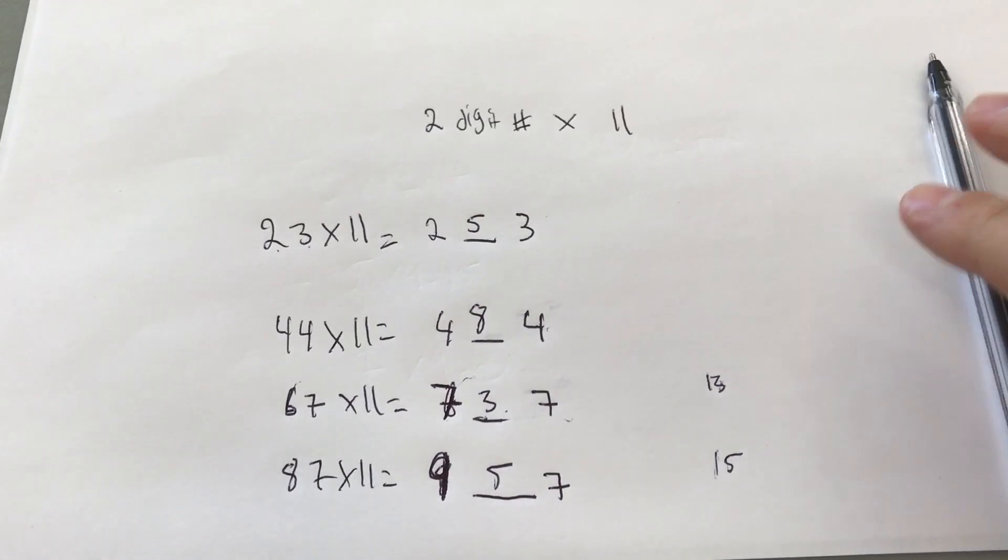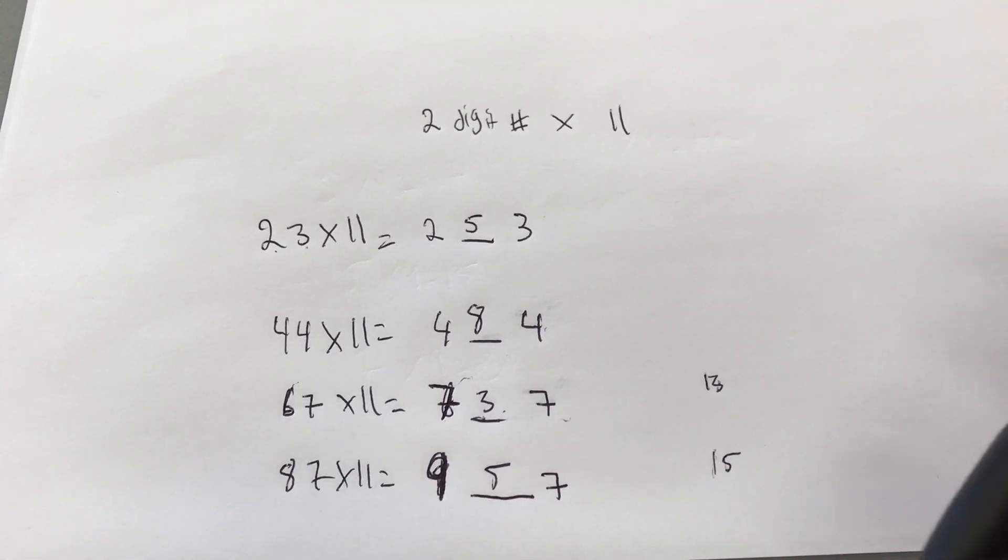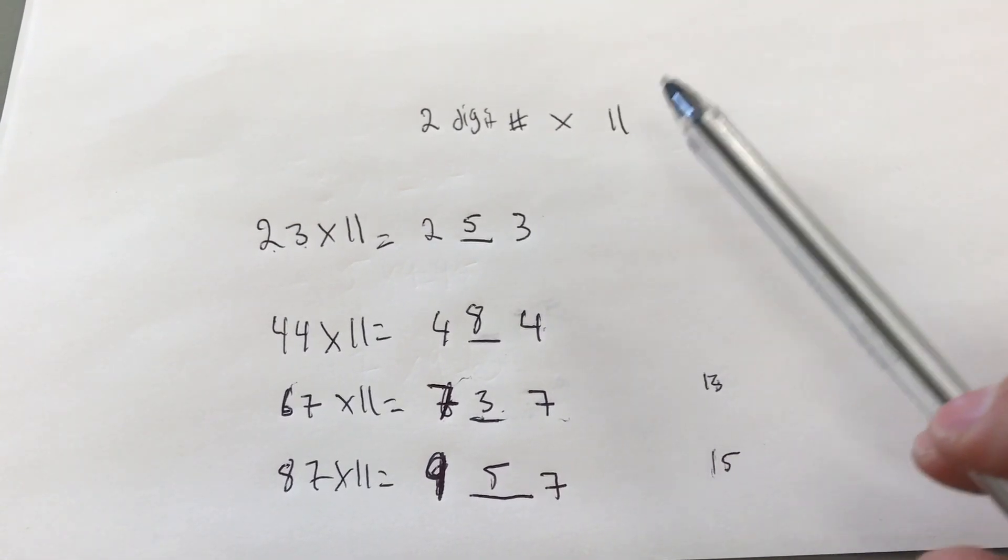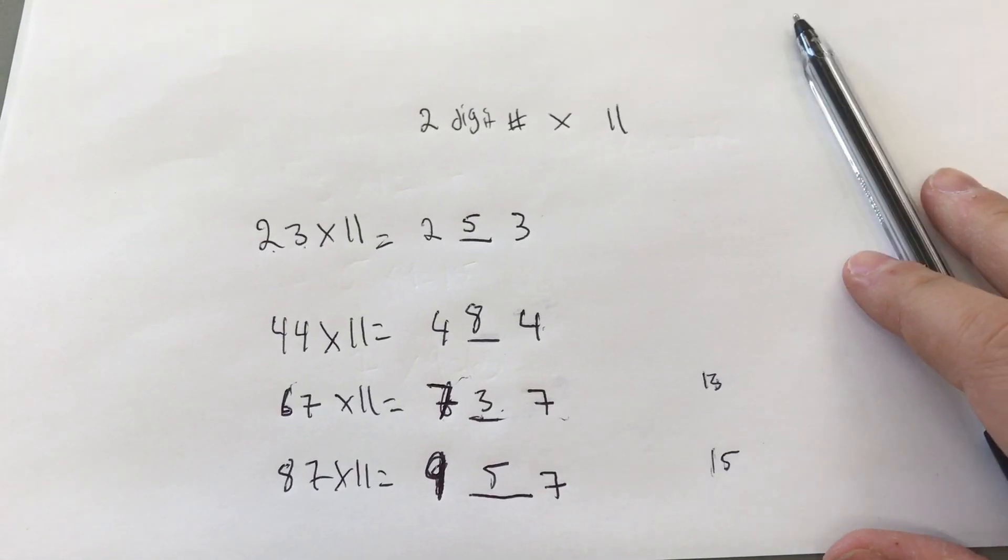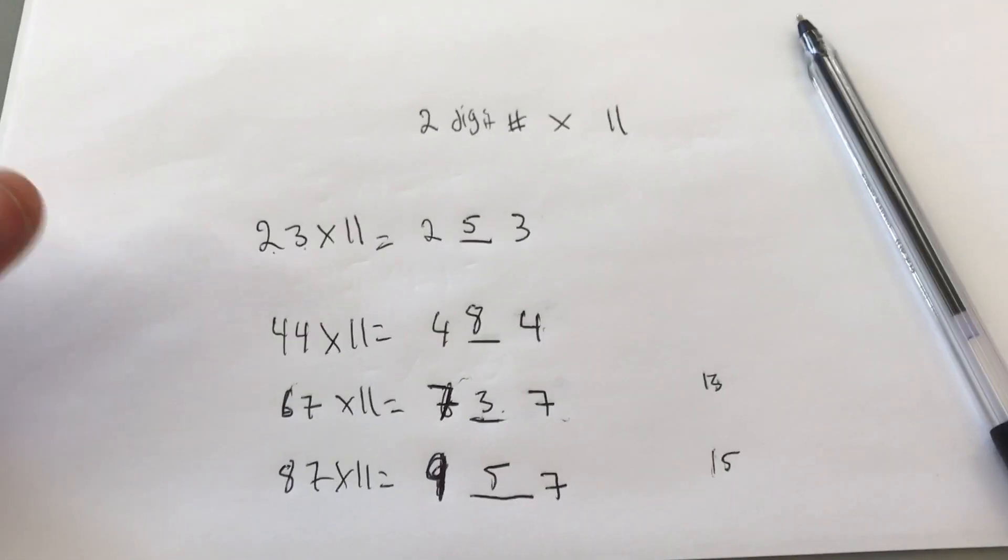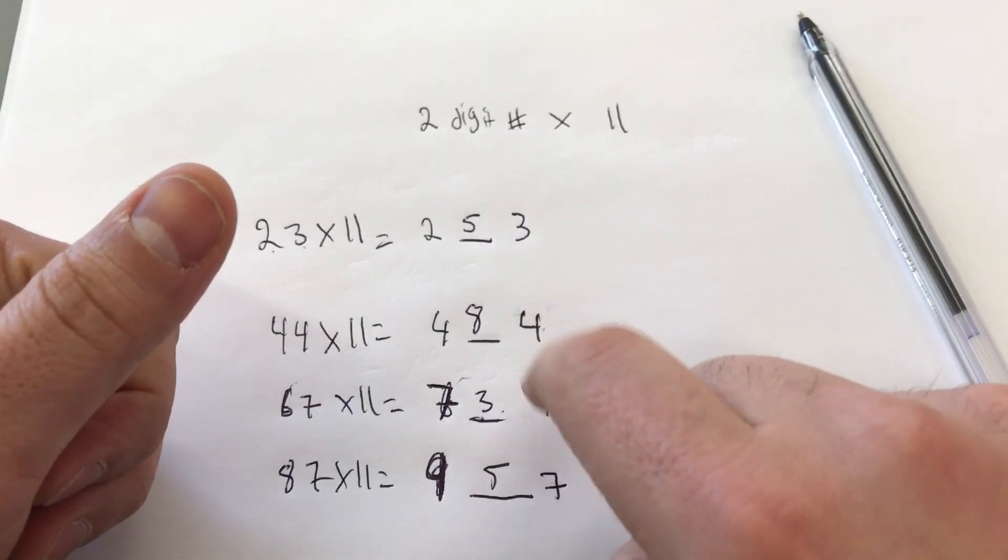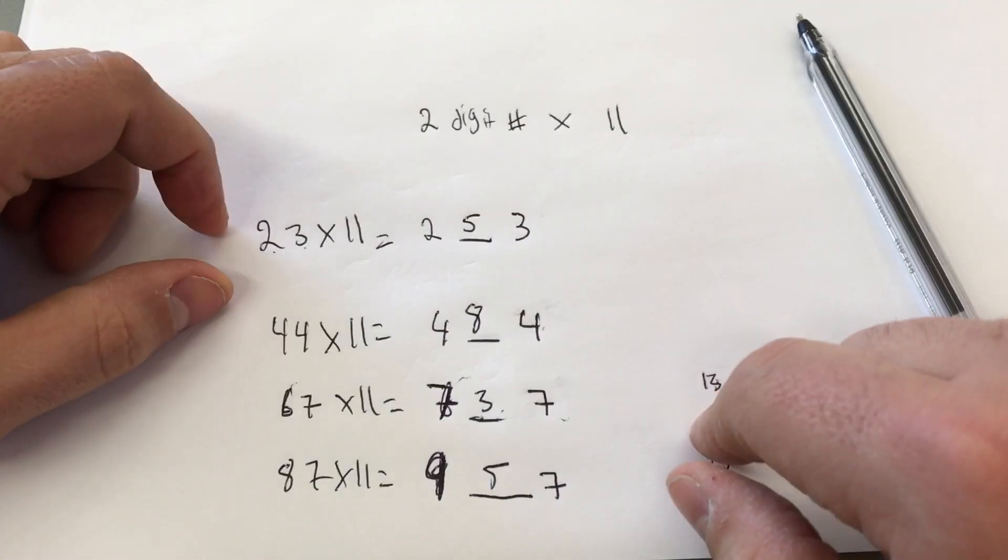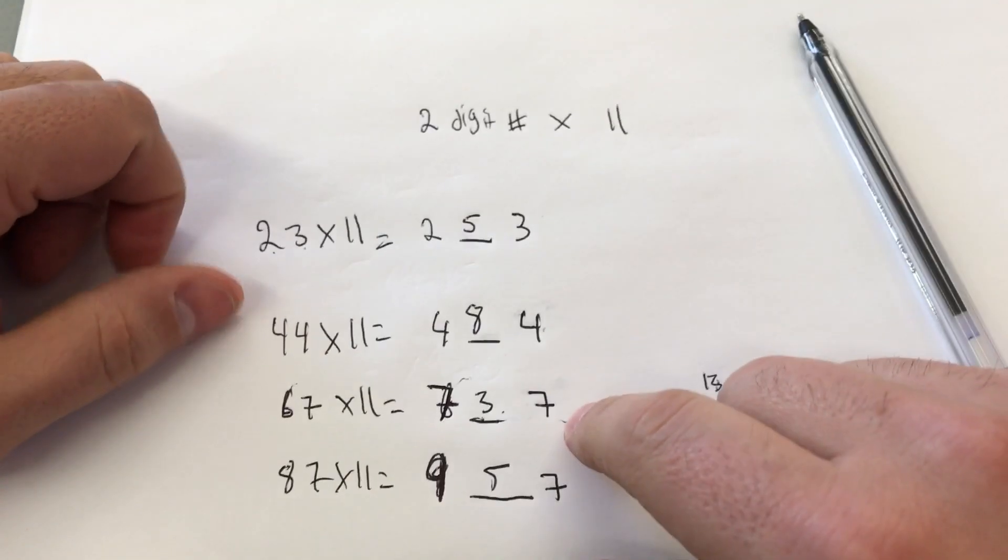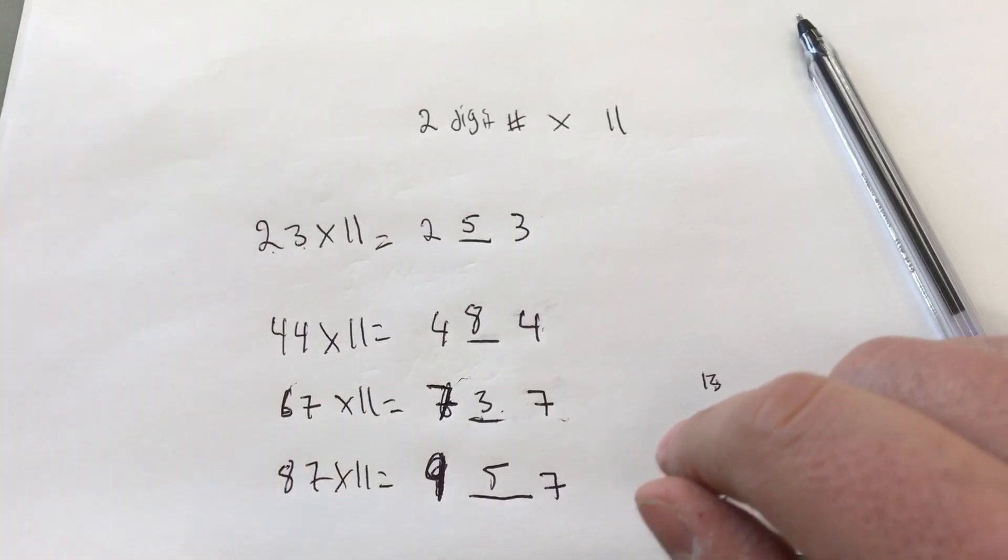And it's literally that simple. That is how to multiply any two-digit number by 11. It's a little math trick. It's a simple math trick that allows you to multiply any two-digit number by 11 really quickly. I hope that you've enjoyed this video. Be sure to give it a thumbs up if you liked it. Let me know what you think in the comments section down below. And if you have any math tricks that you know of or that you want to see videos of in the comments section down below. And above all, please be sure to subscribe. And that's all I have for you today. Thanks for watching.